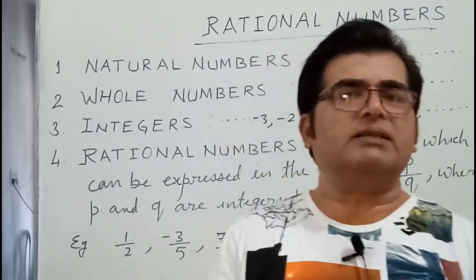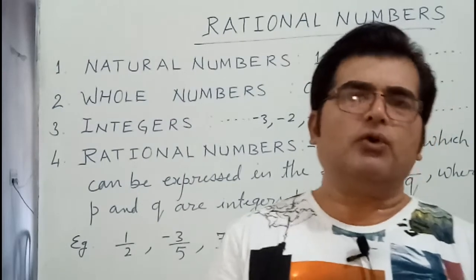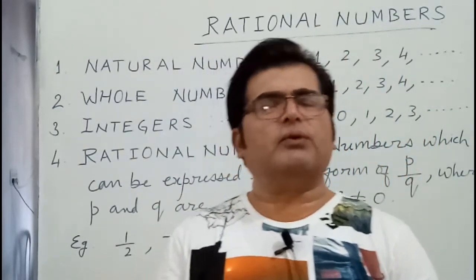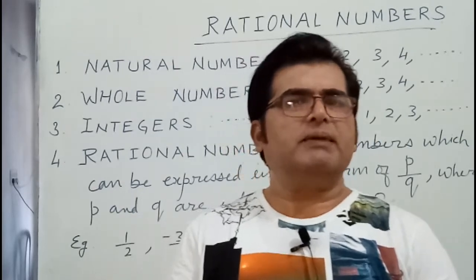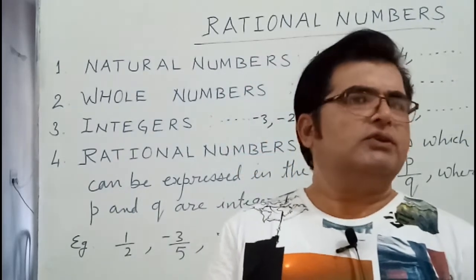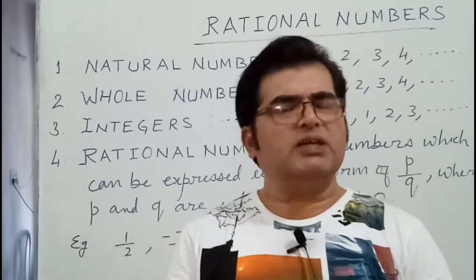Because we can express 0 as 0 upon 1, 0 upon 2, 0 upon 3, 0 upon 4, 0 upon 5, because value remains 0 only. So 0 is a rational number.